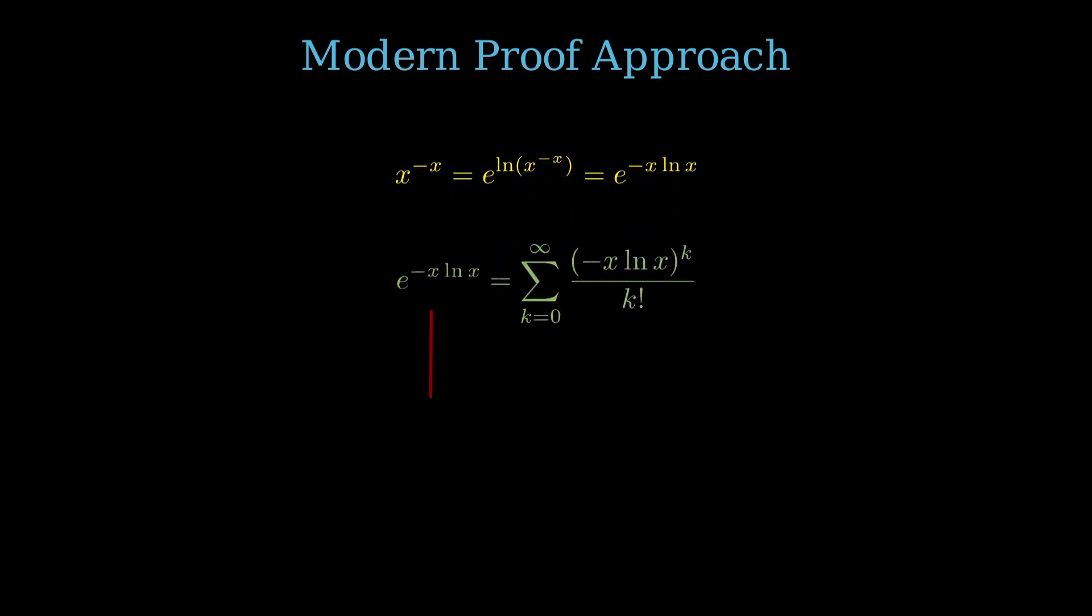Now, we take e to the negative x natural log x and expand it using the Taylor series for e to the u, where u equals negative x natural log x. This gives us the series: the sum from k equals zero to infinity of negative x natural log x to the k over k factorial.